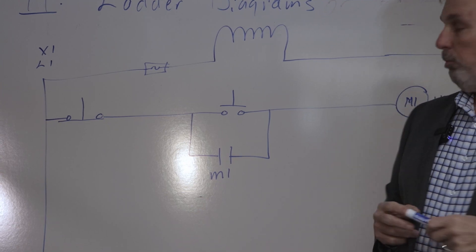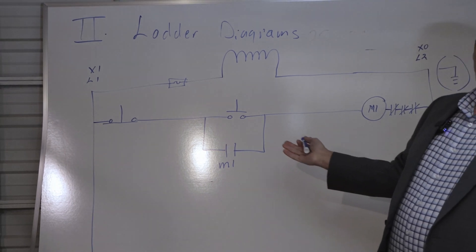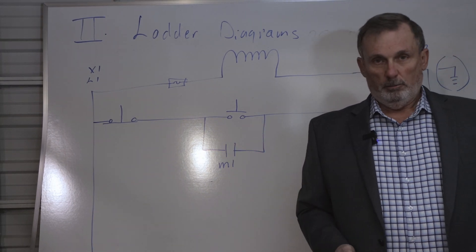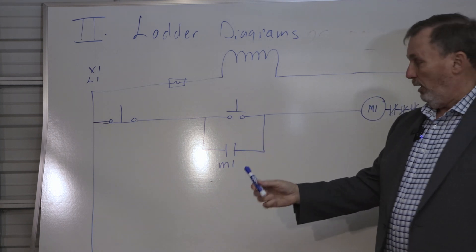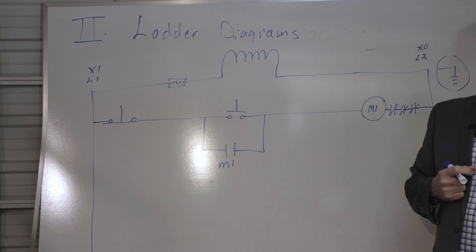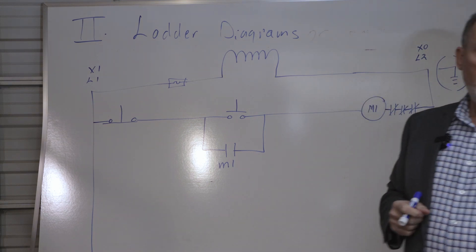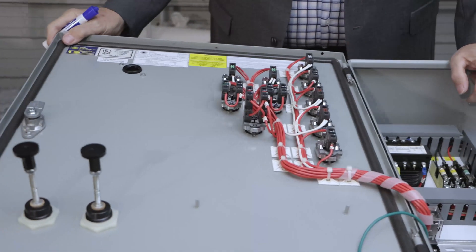This is probably, looking at it on this drawing, a work of art in its simplicity. Nothing is as beautiful to an electrician as this circuit. It's called three-wire control. It's easy to see on a ladder diagram. When you look in a cabinet, not so much.